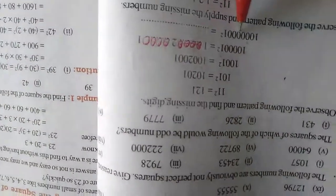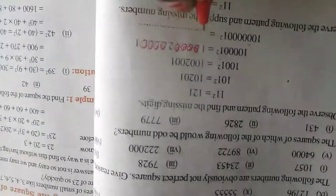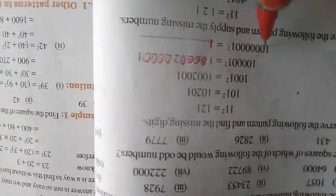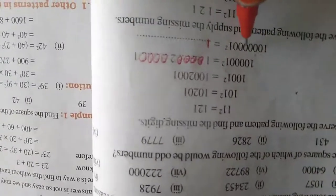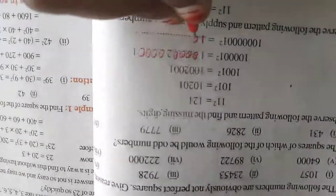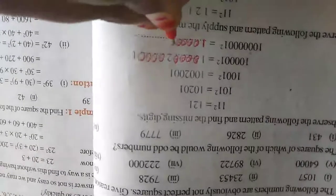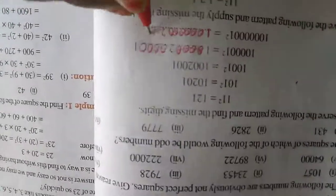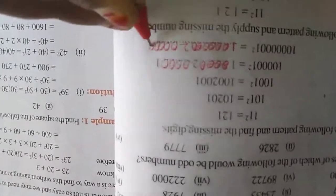So here is the square. Let us go: 1, 2, 3, 4, 5, 6 — so 6 zeros. There are 6 zeros in the 2, and 6 zeros in the 1. That's all.